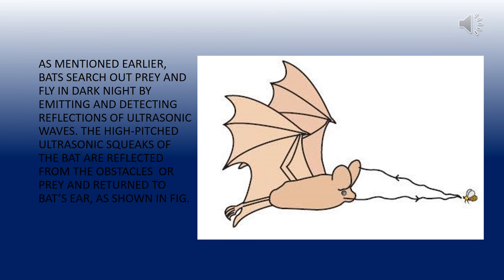Bats search out prey and fly in the dark of night by emitting and detecting reflections of ultrasonic waves. The high-pitched ultrasonic squeaks of the bat are reflected from obstacles or prey and return to the bat's ear, as shown in the figure.